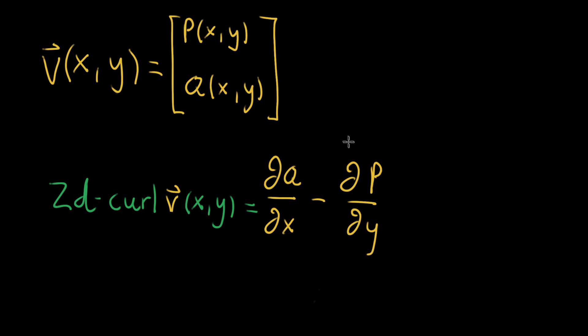In the last couple videos I've been talking about curl, where if we have a two-dimensional vector field V, defined with component functions P and Q, I've said that the 2D curl of that function V gives you a new function that also takes in x and y as inputs, and its formula is the partial derivative of Q with respect to x minus the partial derivative of P with respect to y.